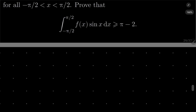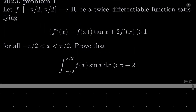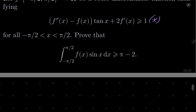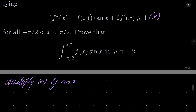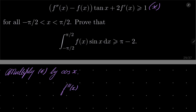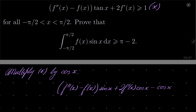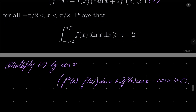So as I suggested, let's first take our condition, asterisk, and multiply it by cosine. Multiply both sides by cosine of x — we can do it because it's positive. We get: second derivative of f(x) minus f(x) times tangent times cosine, which gives sine, plus two times f'(x) cosine(x), minus cosine(x), is greater than or equal to 0. Let's remember that as double asterisk.